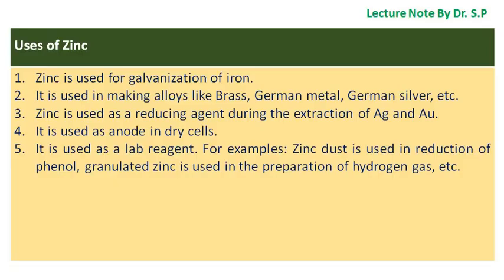Uses of zinc. Zinc is used for galvanization of iron. It is used in making alloys like brass, German metal, German silver, etc. Zinc is used as a reducing agent during the extraction of silver and gold. It is used as an anode in dry cells and as a lab reagent — for example, zinc dust is used in reduction of phenol, and granulated zinc is used in the preparation of hydrogen gas.